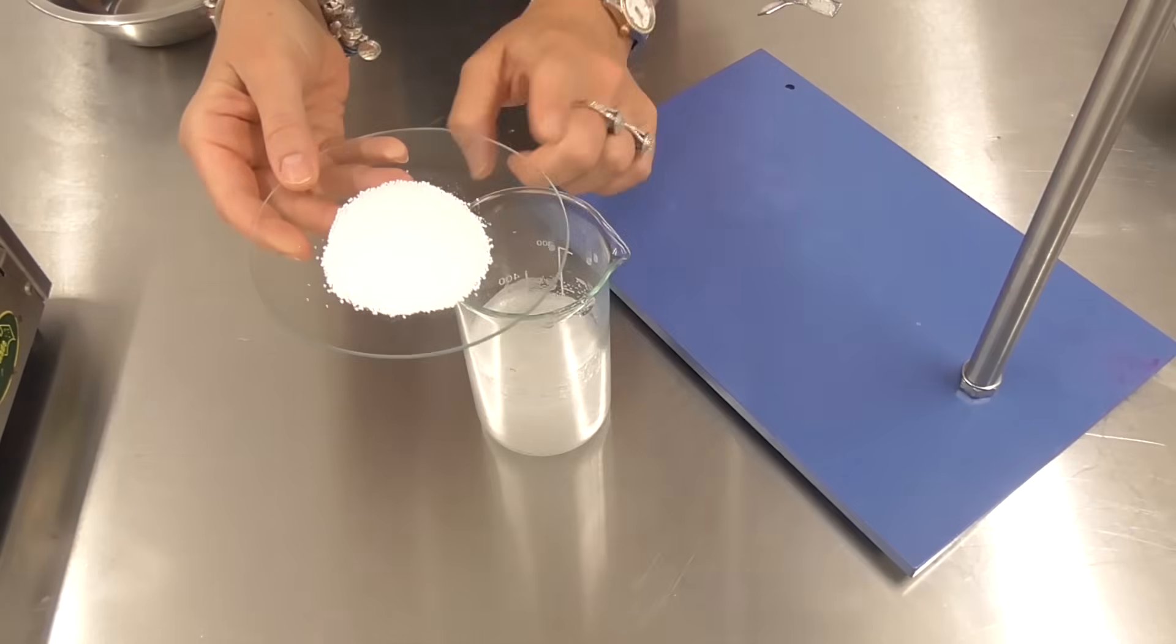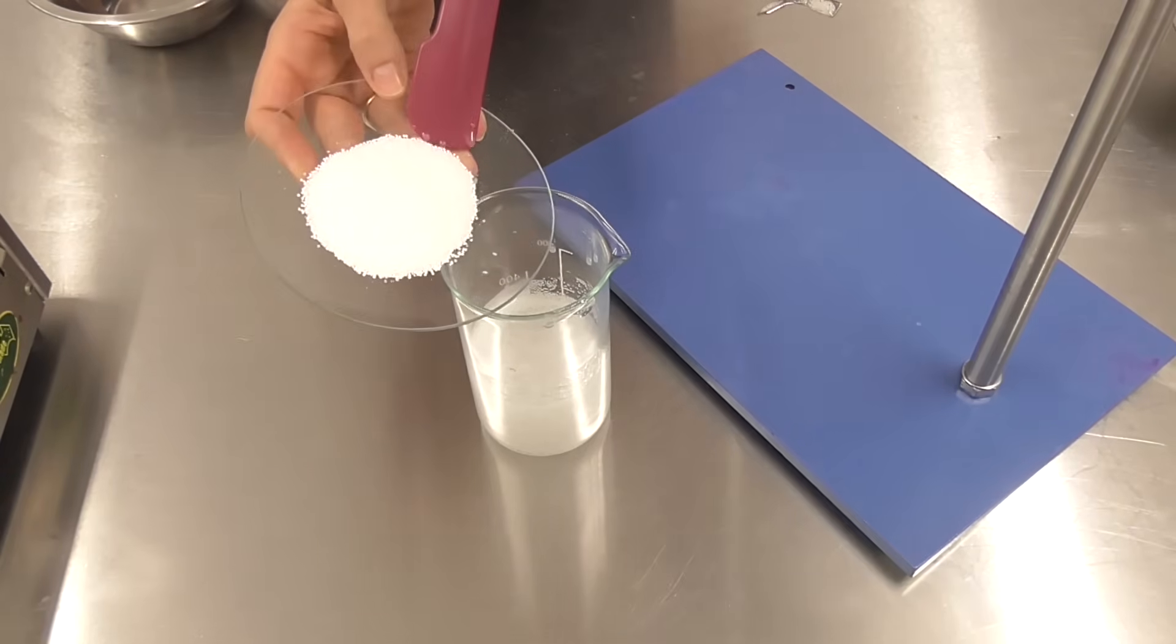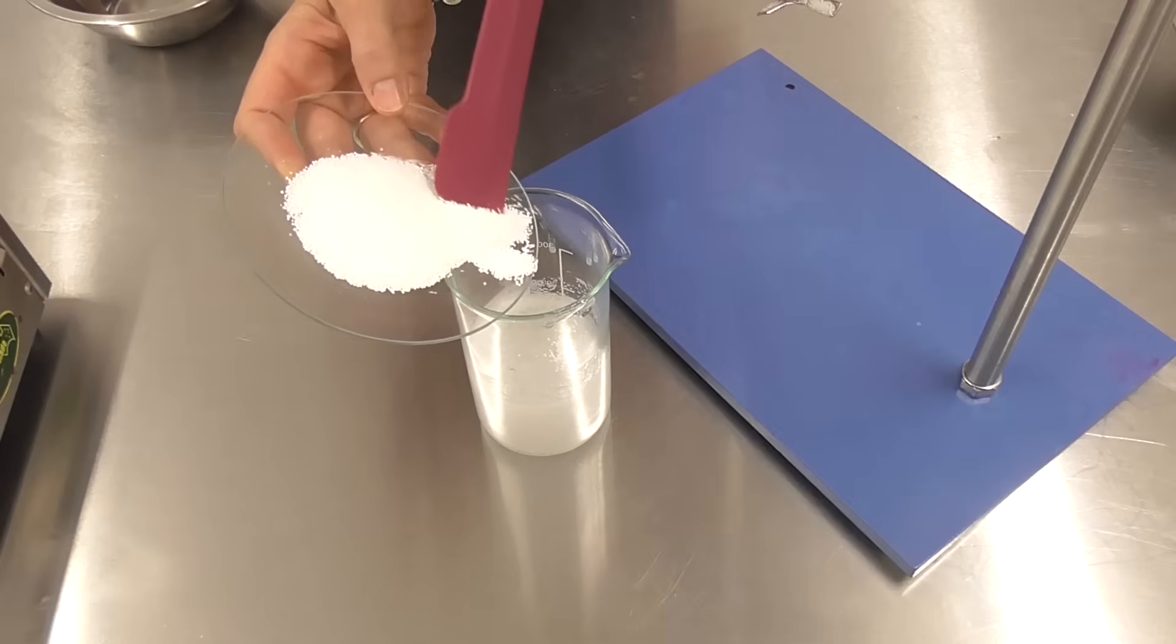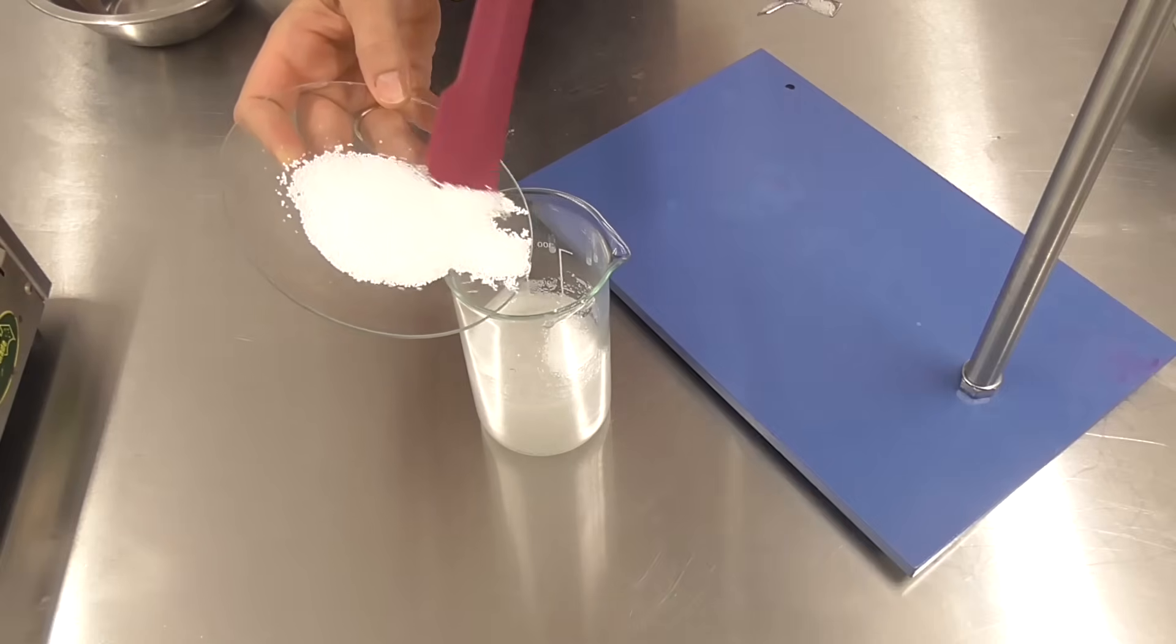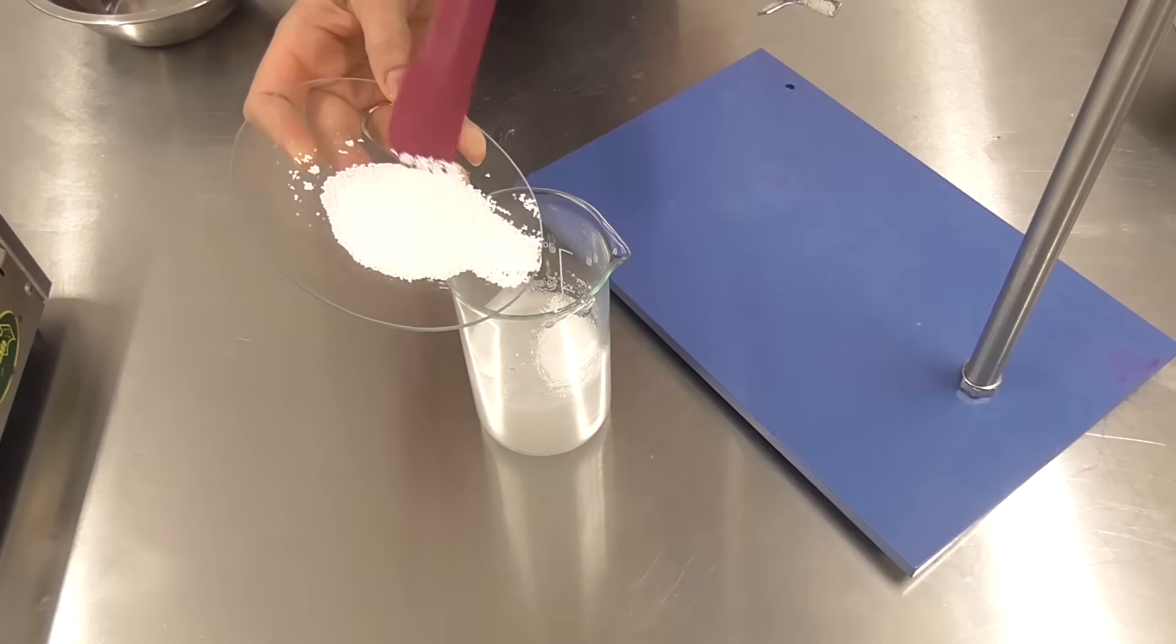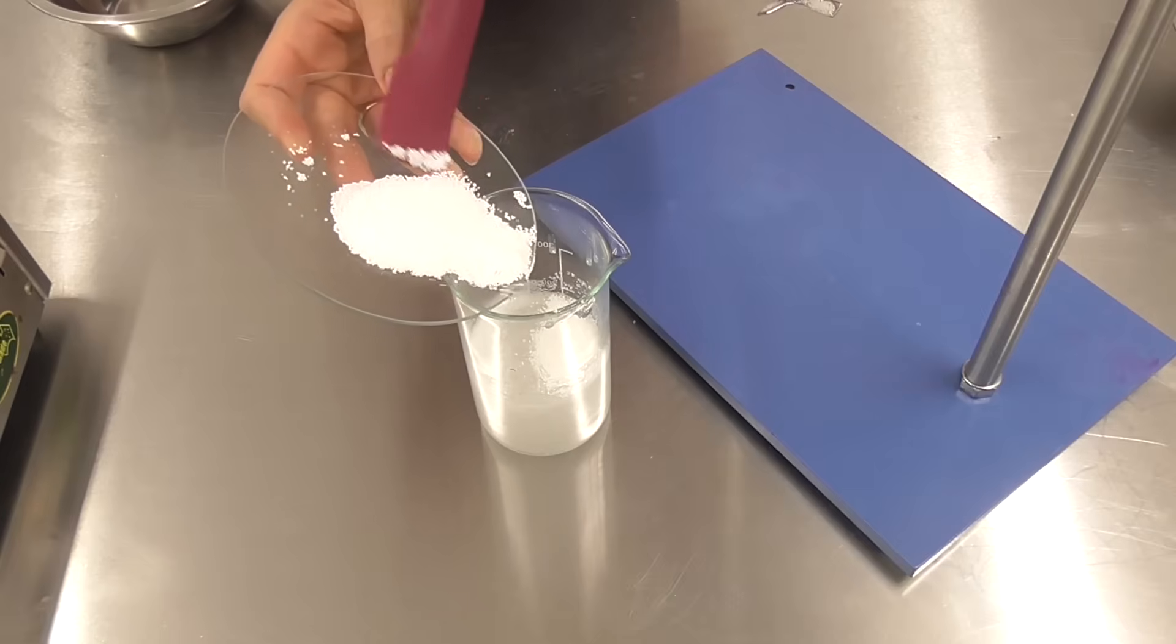Next I'm going to add the anionic surfactant and this is where we're getting a lot of our cleansing performance. This is sulfupon 1216 g, it is a coca sulfate but it is approved for use with cosmos.